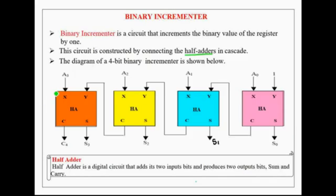Here in this diagram, a 4-bit binary incrementer is shown which is constructed by connecting 4 half adders in cascade. You can notice that the input logic 1 is applied as one of the inputs to the least significant half adder. Whereas, bit values of the binary number to be incremented are applied to the binary incrementer through A0 to A3. The carry generated by each half adder is applied as one of the inputs to the next higher order half adder. The S outputs of each half adder indicate the bit values of the incremented value of the binary number.